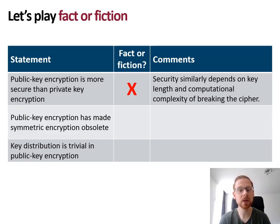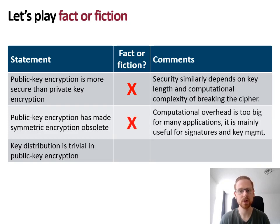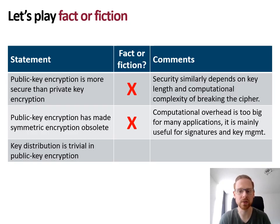The security similarly depends on the size of the key and the computational complexity of breaking the cipher. Second statement: public key encryption has made symmetric encryption obsolete, because it enables the same applications but also enables key distribution and digital signatures. This statement is also false. While the applications of public key encryption are broader, it has some issues — mainly its computational overhead is much bigger than symmetric encryption algorithms. This is the case for all asymmetric encryption algorithms proposed to date. As such, it is mainly useful for encrypting small messages, and its applications are therefore digital signatures and key management. It is too computationally intensive for general purpose confidentiality.